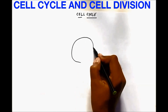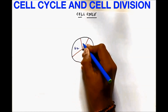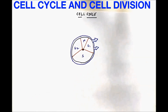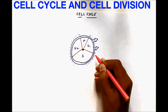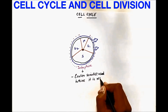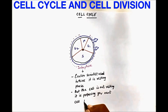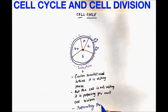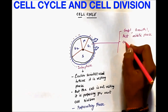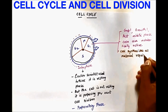When we talk about the cell cycle, we draw a circle and label G1, S, G2, and the M phase. G1, S, and G2 together are called interphase. Earlier scientists believed it was a resting phase, but the cell is not resting — it is preparing itself for the next cell division. Therefore interphase is also called the preparatory phase. G1 stands for Gap 1, Growth 1, or post-mitotic phase. Here the cells are metabolically active and synthesize all material required for DNA replication, but DNA does not replicate.